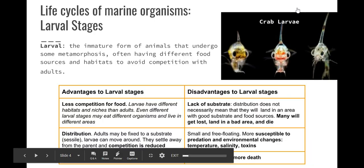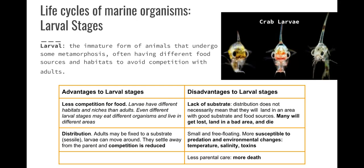Marine larval stages. Larvae is how they all start out — kind of like our version of a zygote, which is a fertilized egg, or a blastocyst when it's about 80 cells big. It's the immature form of an animal, and they undergo metamorphosis, often having different food sources and different habitats than their adults to avoid competition. The advantages of being in a larval stage: there's less competition for food because they're going to have different niches, different roles, different habitats.